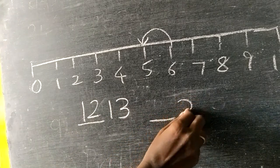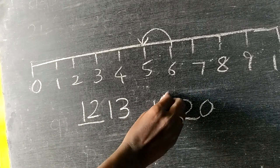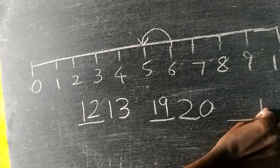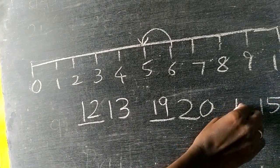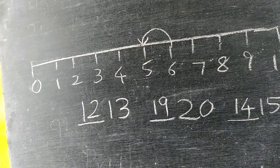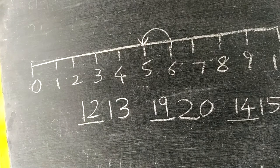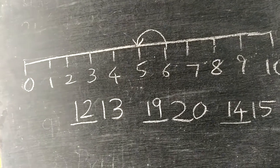Before 20 what comes? 19. Before 15? Yes, 14. So that's why we have to write always 1 to 100 numbers one time every day at home.